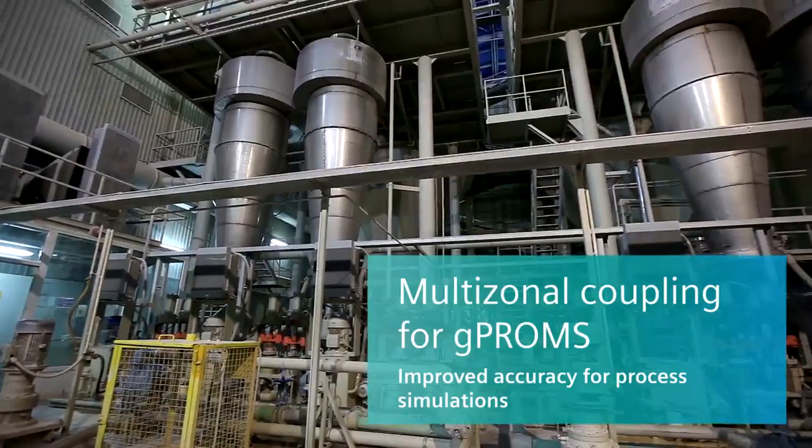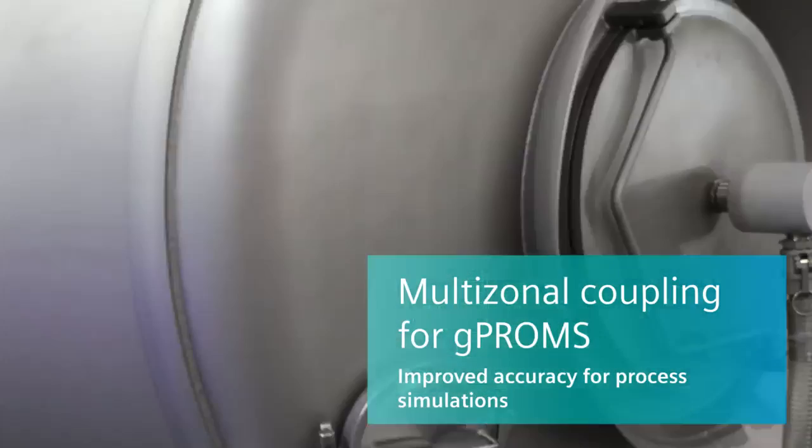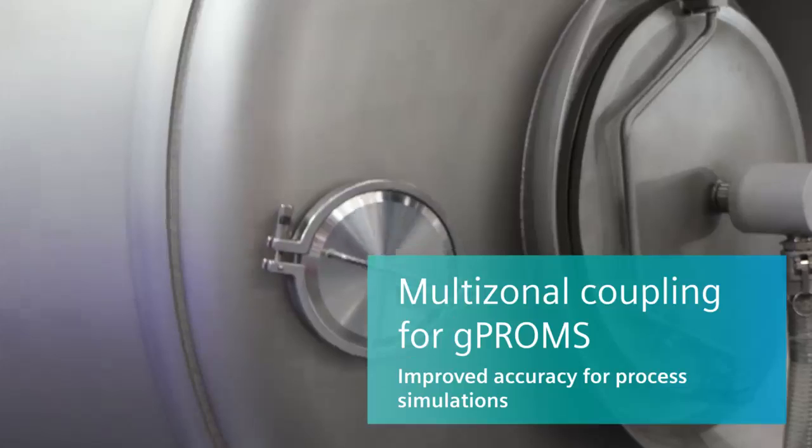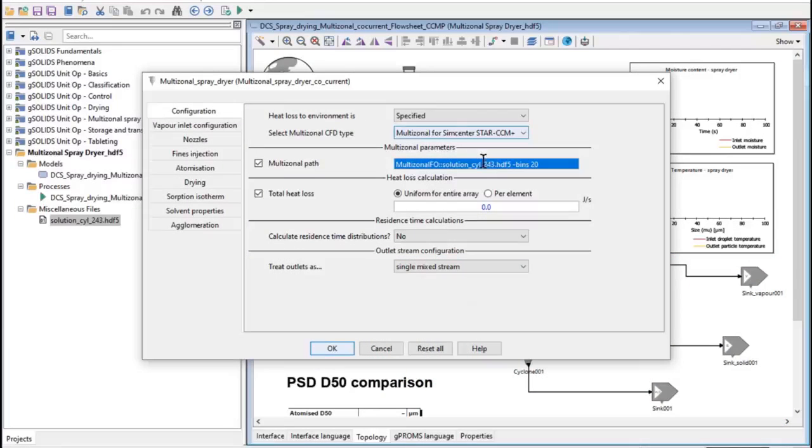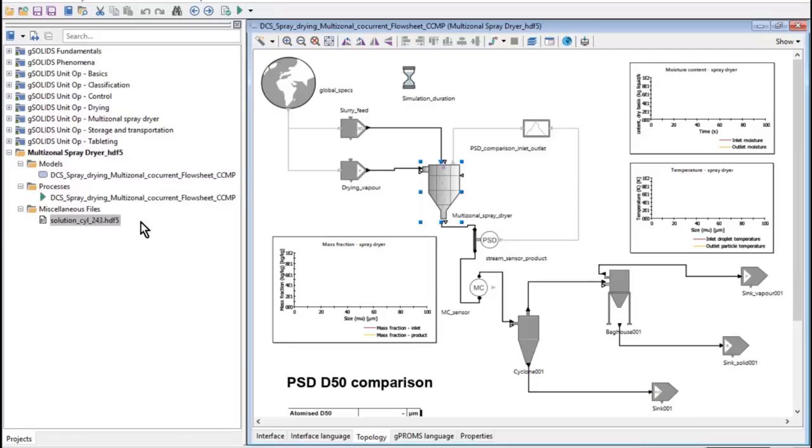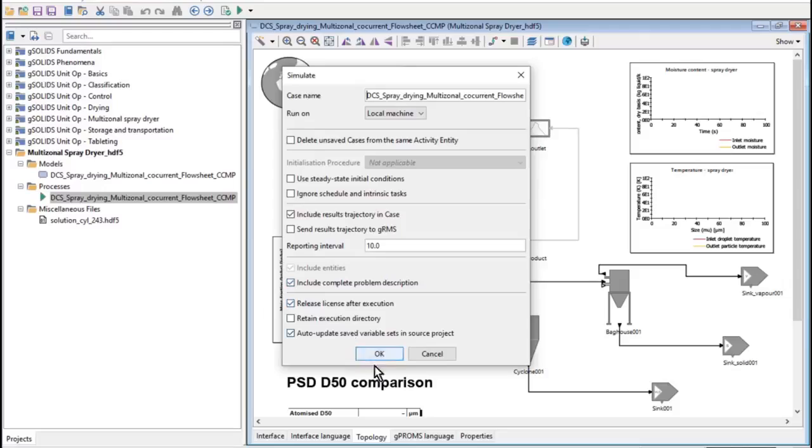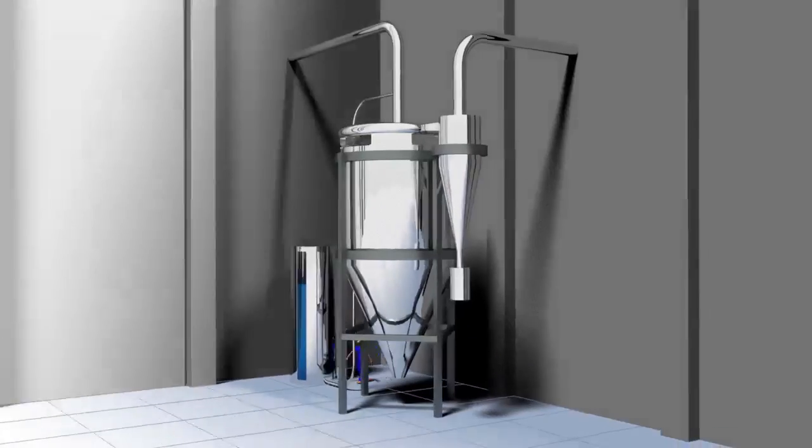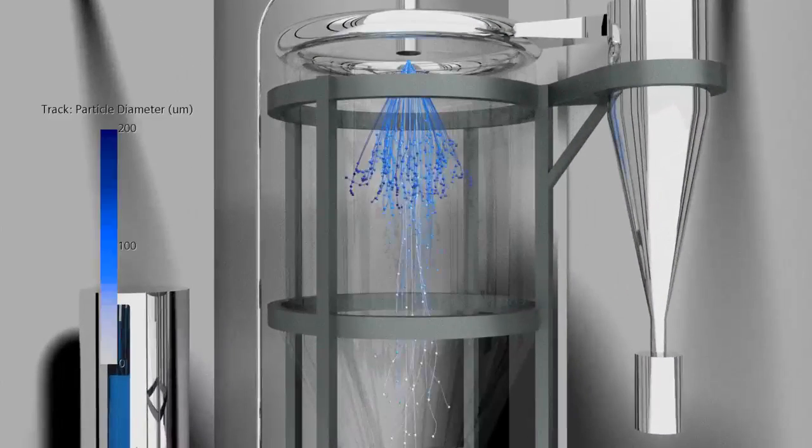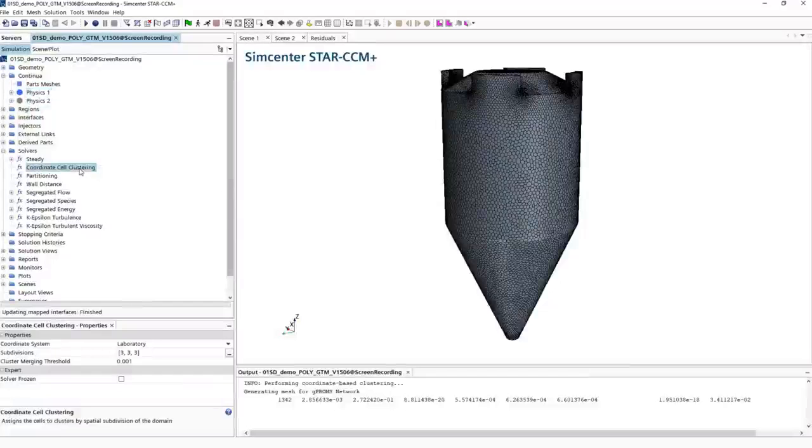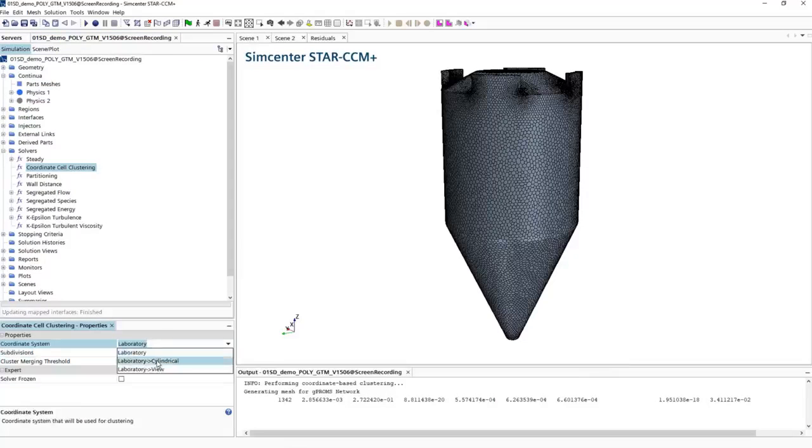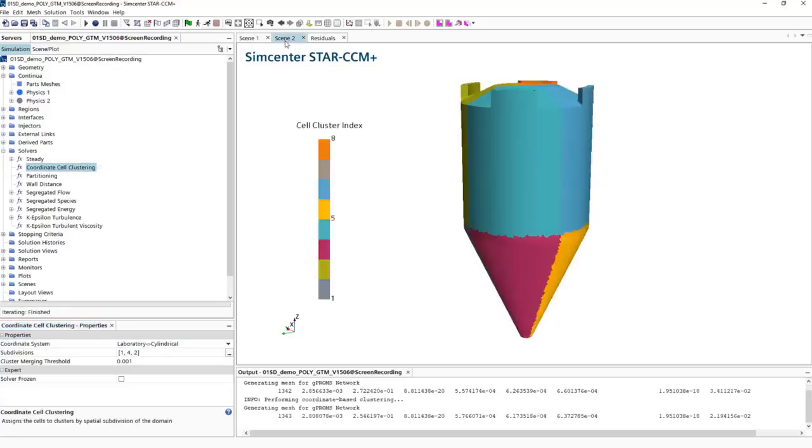Improving chemical processes like spray drying or mixing requires accurate modeling of complex physics and chemistry. GPROMS is a powerful modeling environment to simulate such processes. You can now easily use CFD simulations from SimCenter STAR-CCM Plus to calibrate a multizonal GPROMS model, improving accuracy and eliminating uncertainty.